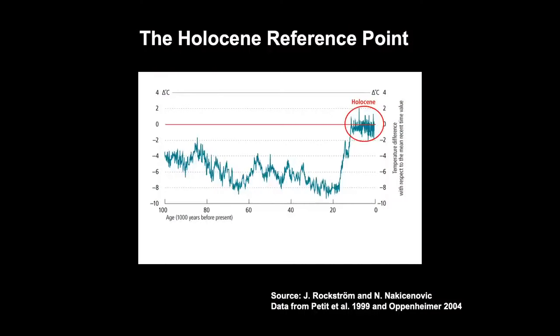My name is Will Steffen. I'm an Earth System Scientist. So here's our reference period, the Holocene. This is a 100,000-year record of Earth's temperature. You can see the last ice age, the ups and downs, but the general decrease in temperature going down to the depth of the last ice age about 20,000 years ago. But it's this last nearly 12,000 years of relatively stable conditions compared to an ice age that's referred to as the Holocene by the geologist. This is when humans first developed agriculture, villages, cities, and we've thrived during this period of the Holocene.